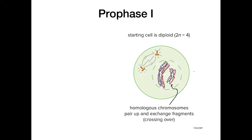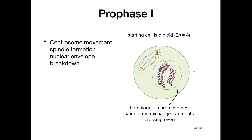Moving on to the first stage of meiosis — it's split into meiosis 1 and meiosis 2, so our first stage is prophase 1. In this stage we're starting as a diploid cell with homologous chromosomes pairing up. We have centrosome movement — the centrosomes moving to opposite sides of the cell — spindle formation, which was discussed in chapter 12, the nuclear envelope starting to break down, and chromosomes condensing.